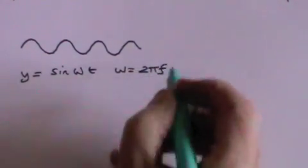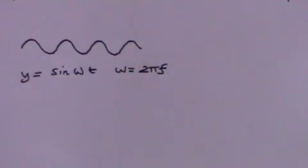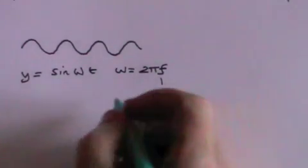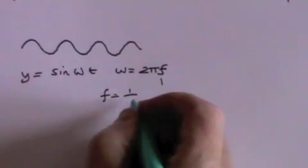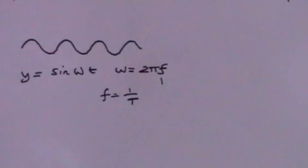Consider the sine wave y equals sine omega t. Omega is 2 pi f, and f is the frequency, which is the inverse of the period of the wave — that is, the time to complete one cycle.